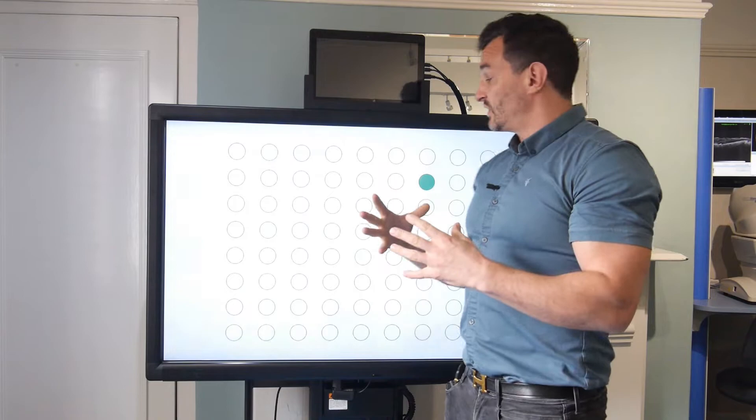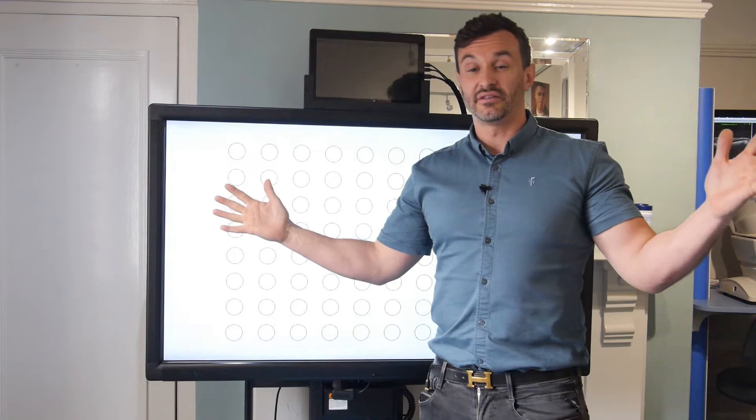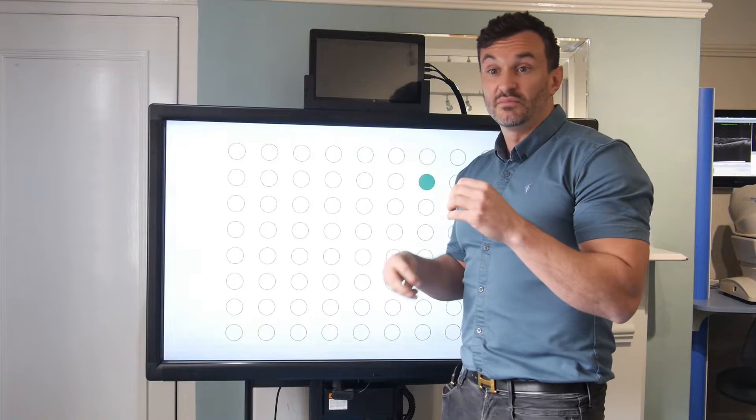We sometimes find people are really good and really fast and accurate in that centre, but we find that the peripheral side of things is tricky. So we use this with athletes from all different kinds of sports. When we're training premiership goalkeepers, for example, we end up making the targets really, really small.